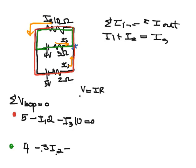Minus 3 I2, then I come to the 10 ohm resistor, so minus 10 I3, and I set that equal to 0.